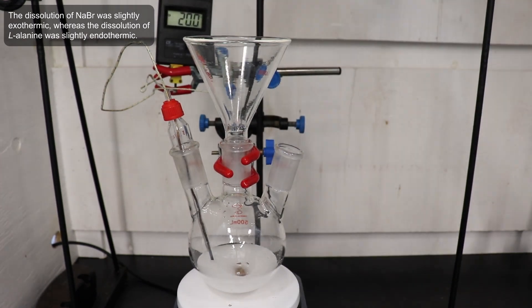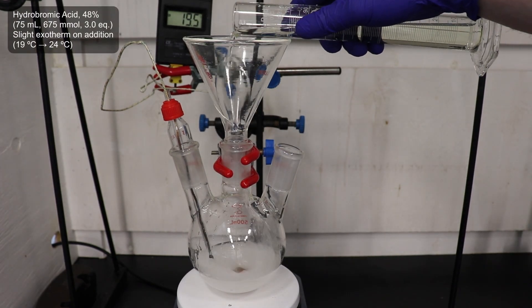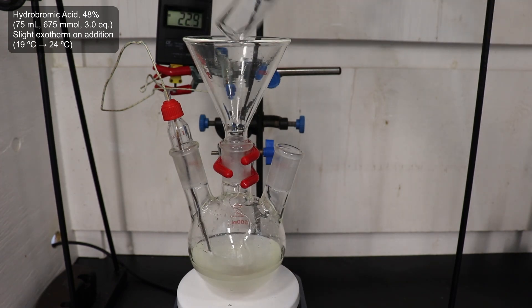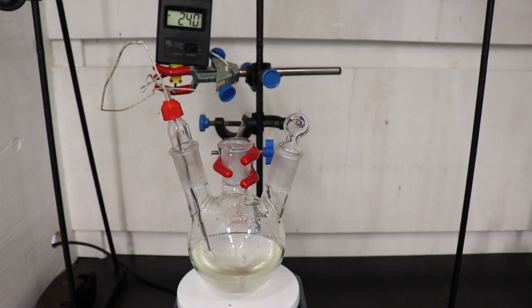Then, I added in 75 mL of azeotropic hydrobromic acid, which I had prepared myself from sodium bromide and sulfuric acid. The addition of the hydrobromic acid caused a slight exotherm, with the temperature rising from 19 to 24 degrees Celsius.